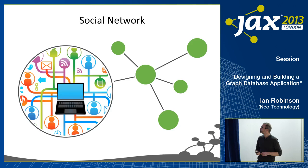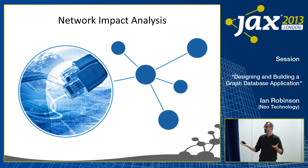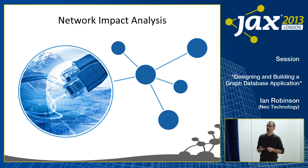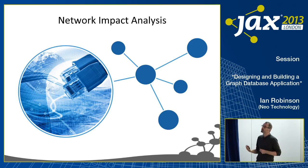Network impact analysis: if you could model the entirety of a telecommunications network, we could start to ask really interesting questions. Given a particular important customer, which parts of the network do they depend upon? Which applications and services, which machines, virtual machines, data centers, network elements, switches and routers? That's a top-down analysis, but it depends upon understanding all those different things within that domain and the ways in which they're connected.